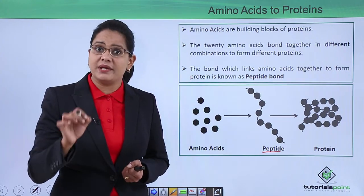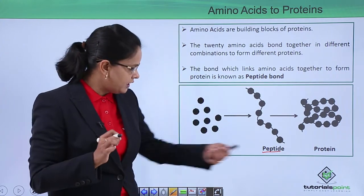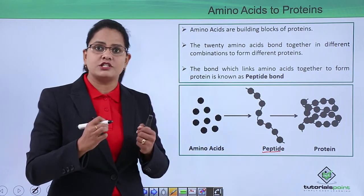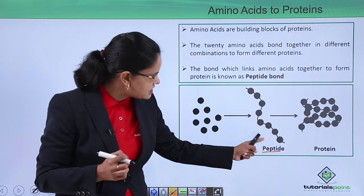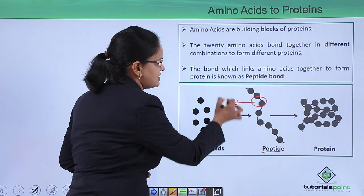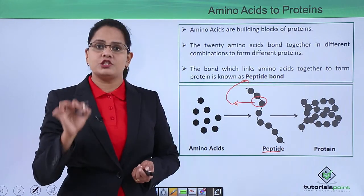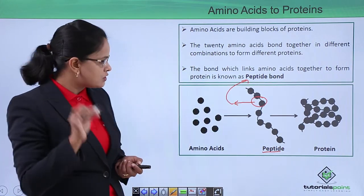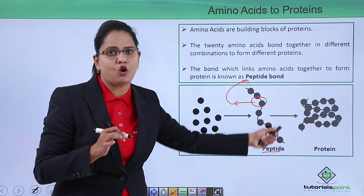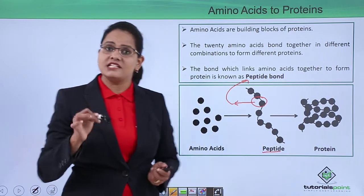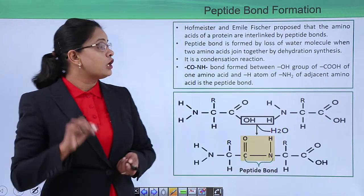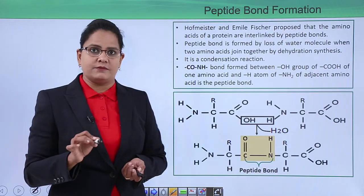The bead-on-a-string is not yet a protein, because it has not undergone folding. The peptide bond joins together the amino acids. These peptides then undergo different types of foldings and coilings, and a protein is formed. Let us now have a look at how the peptide bond is formed.